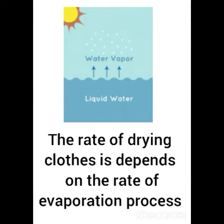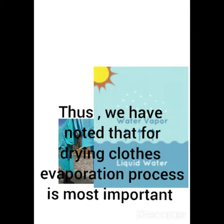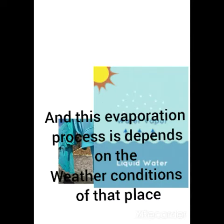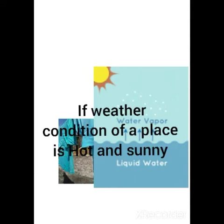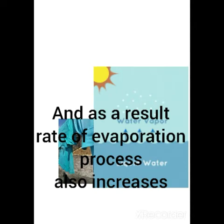The rate of drying clothes depends on the rate of evaporation, and evaporation depends on the temperature of the air. If the weather condition of a place is hot and sunny, then the temperature increases and the rate of evaporation also increases. The rate of evaporation is more when the intensity of sunlight is high, especially in summer season. Clothes on a clothesline will dry in a short time in the open in summer because of the faster evaporation process.